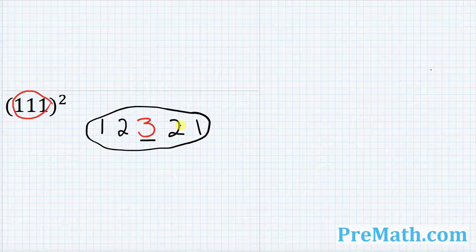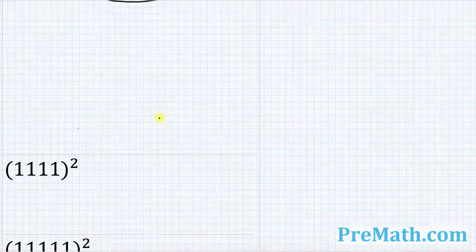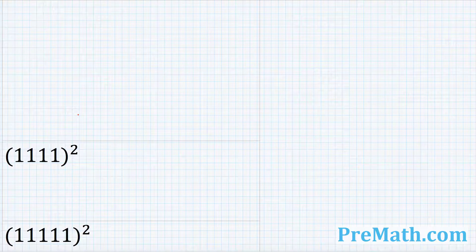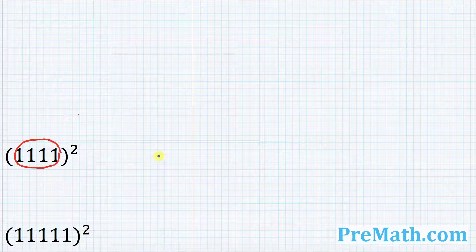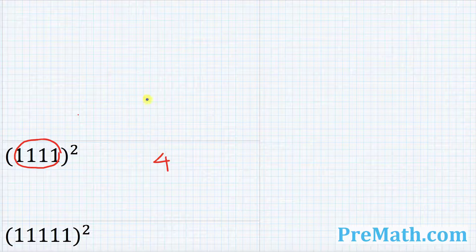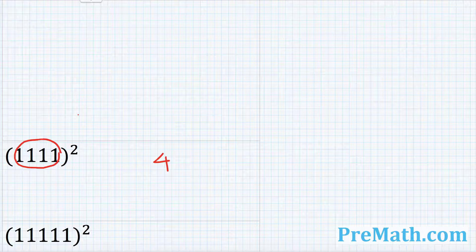Let's move on to another example. How about this one? How many digits we see? Now in this case we have four digits. So I want you to write down four. So now next thing is I want you to start counting from the left hand side. That's gonna be one, two, three, four.